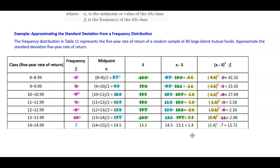The class 14 to 14.99 has a frequency of 7. The midpoint is 14.5 and the sample mean is 13.1. Taking 14.5 minus 13.1 gives 1.4. 1.4 squared times the frequency of 7 gives 13.72.